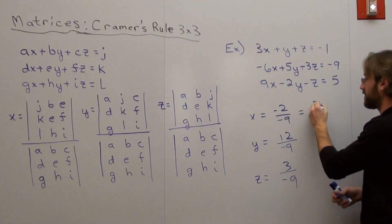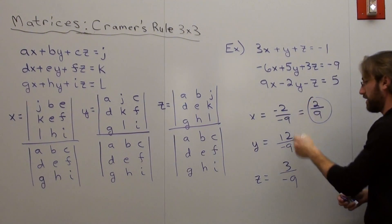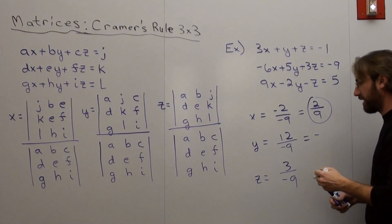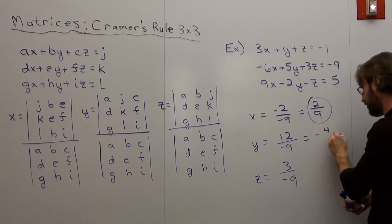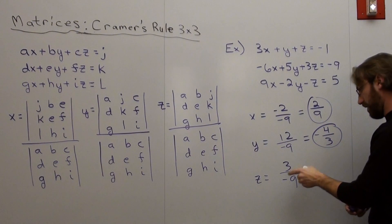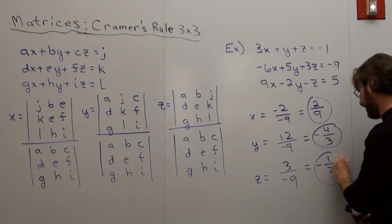Anyways, negative divided by negative is positive, so it's 2 ninths. 12 over negative 9 reduces to negative 4 thirds, and that reduces to negative 1 third. That's it.